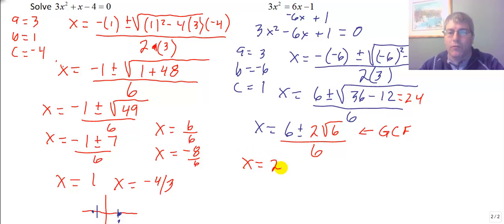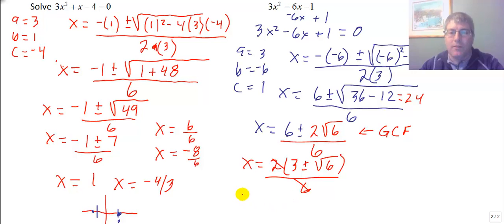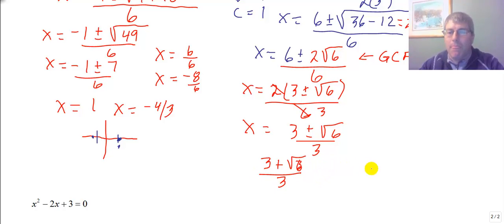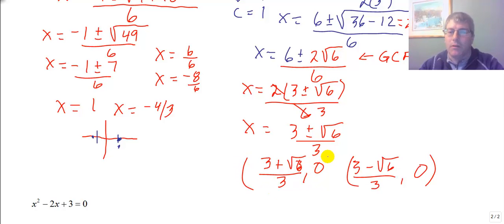So x equals 2 times 3, plus or minus the square root of 6, all over 6 — which simplifies to x equals 3, plus or minus the square root of 6, all over 3. Our two x-intercepts are 3 plus the square root of 6, all over 3, and 3 minus the square root of 6, all over 3. Written as ordered pairs, they look like that.